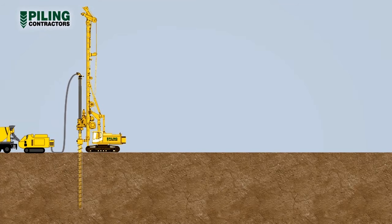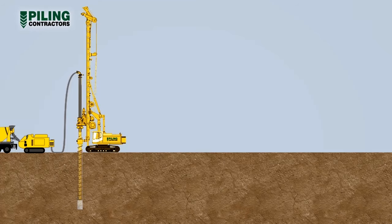A CFA pile is constructed by rotating a full-length auger into the ground to the required depth. Auger diameters from 450 millimeters to 1200 millimeters are common.